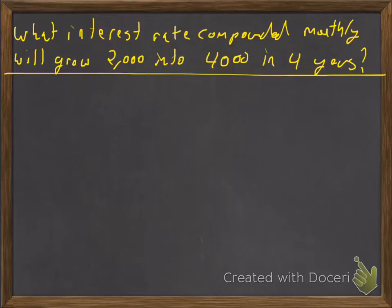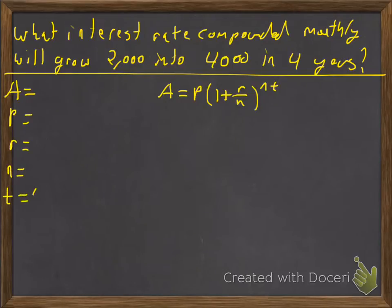So let's say we want to know what interest rate compounded monthly will grow 2000 into 4000 in 4 years. So this is a compound interest problem. So A is equal to P times 1 plus r over n raised to the nt power. And we're just going to list what we know. So the amount is what we want in four years. Principle is going to be what we start with. Interest rate is what we're trying to find.